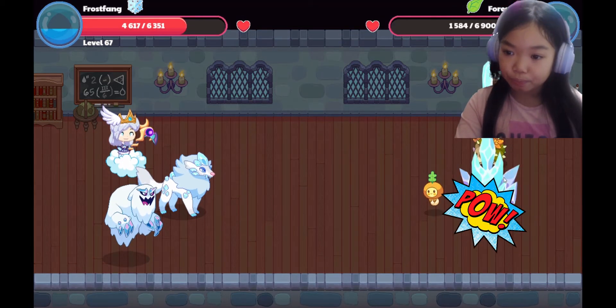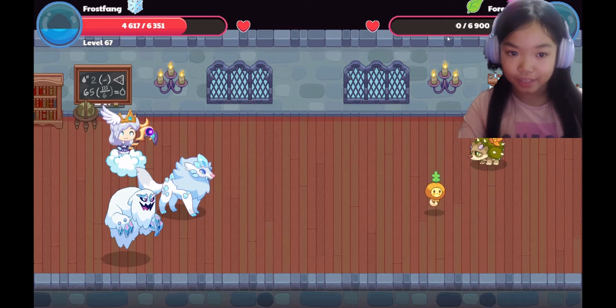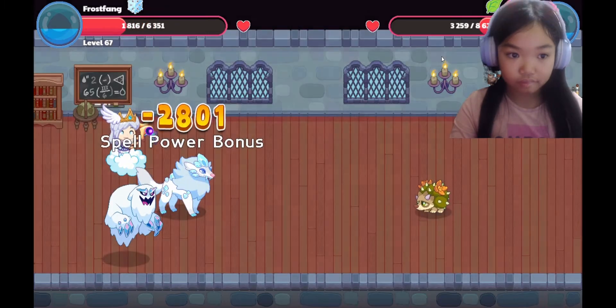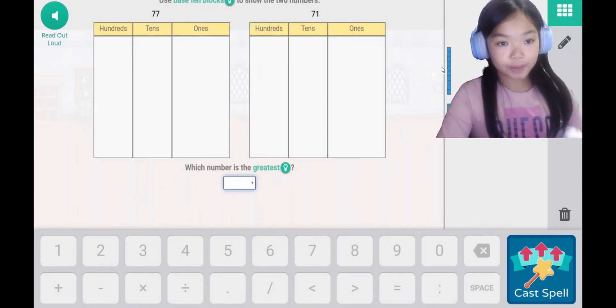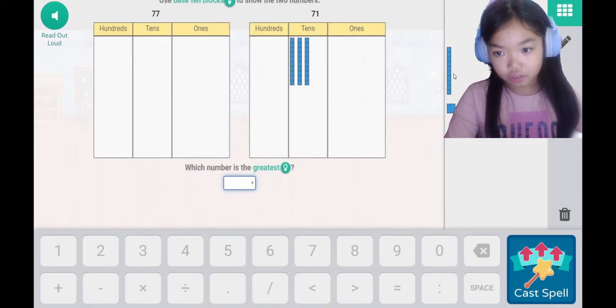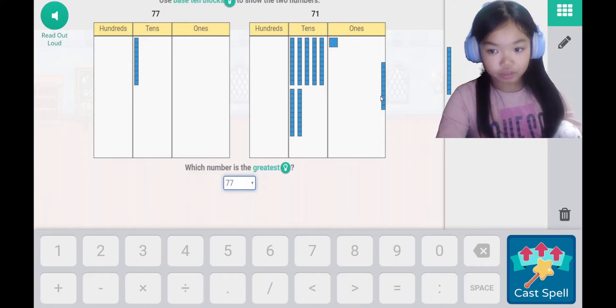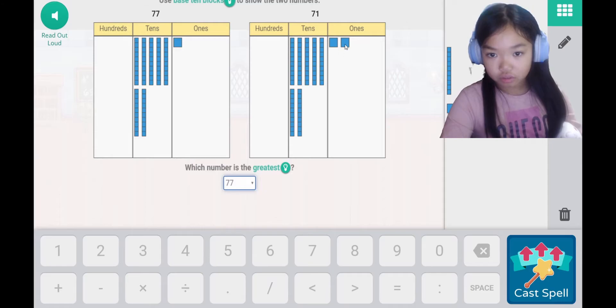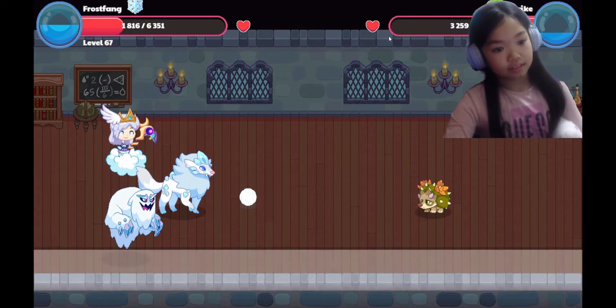Pick out. That slows down. Spiky one. That's hard. Use base 10 blocks to show the two numbers, 1, 2, 3, 4, 5, 6, 7. And 1, 1. And 1, 2, 3, 4, 5, 6, 7. I already did the one with the greatest. It's 77 because 71 is less than 7.